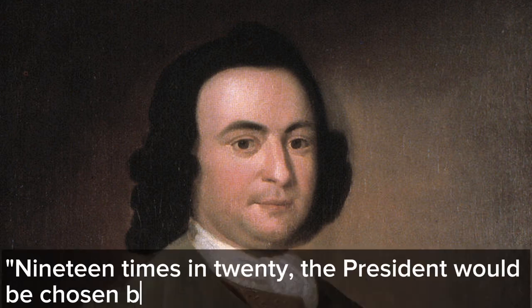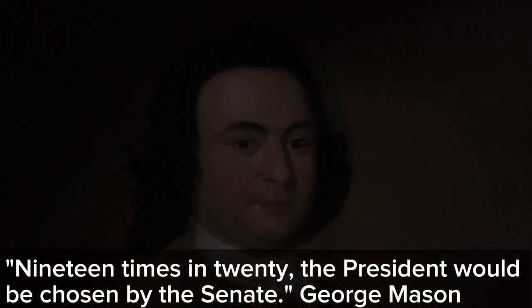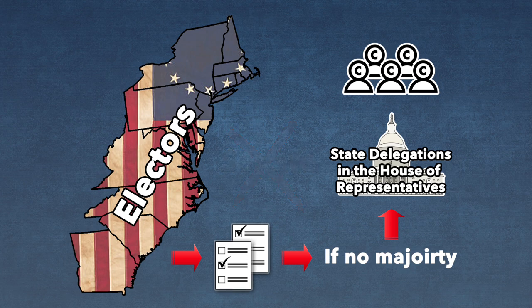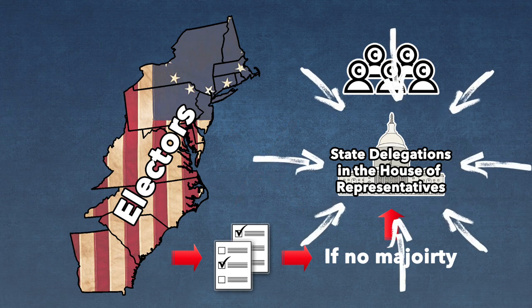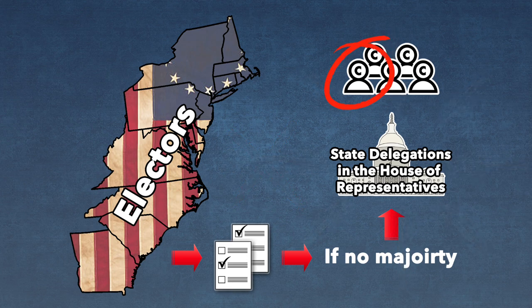Delegates assumed candidates would rarely receive a majority. As George Mason would claim, quote, '19 times in 20, the president would be chosen by the Senate.' After some further debate, the Senate lost selection powers and was replaced by the House of Representatives, but voting equally by state delegations to choose from the top five candidates.